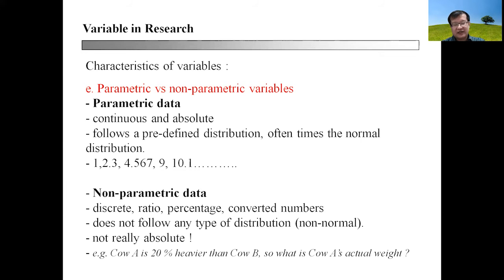Whereas non-parametric data do not conform to normal distribution and comprise discrete data, ratio, percentage, converted numbers, and may not follow any types of distribution or are non-normal data. Why? You can look at this example: if I say cow A is 20% heavier than cow B, what is cow A's actual weight?